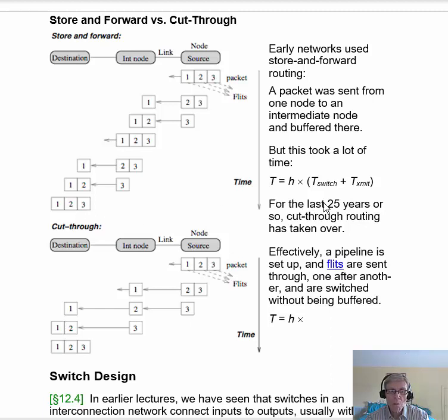But that was a very slow way to do it. The time it took was the number of hops times the switch time plus the time to transmit. In other words, the time to initiate the message plus the time to transmit, and that cost was incurred every time the message made a hop.